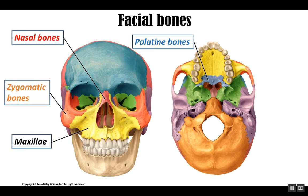The palatine bones form the posterior portion of the hard palate. There's a right and left palatine bone that come together to form that posterior portion of the palate. There's a condition called cleft palate, which is a developmental defect where these bones fail to come together. This happens typically around weeks 10 to 12 of embryonic development, so failure for these to fuse can cause that condition.